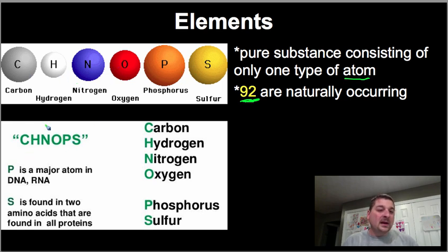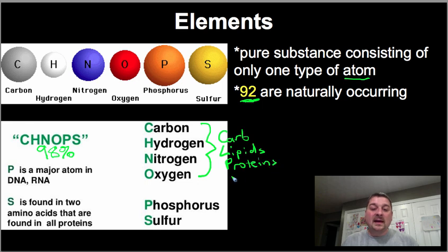We can even narrow that down even further into CHNOPS. As humans, we are 98% C-H-N-O-P-S. Carbon, hydrogen, nitrogen, oxygen. These four right here are big ones. We use them for carbohydrates, we use them for lipids, we use them for amino acids, which build proteins, and also for nucleic acids, which we'll get to later this chapter, your DNAs and your RNAs. And along with that, P stands for phosphorus. That's a major atom we find in DNA and RNA, and then the S stands for sulfur, which is an important element found in amino acids, which then make up proteins.